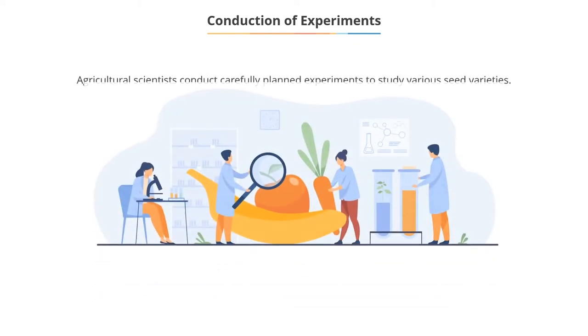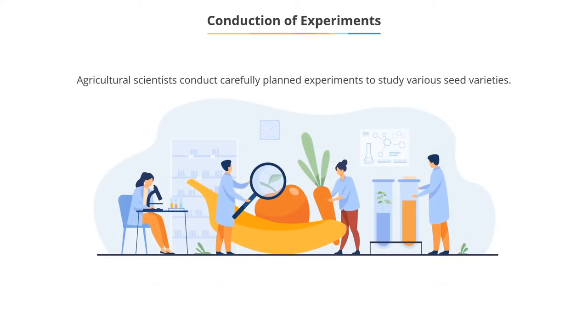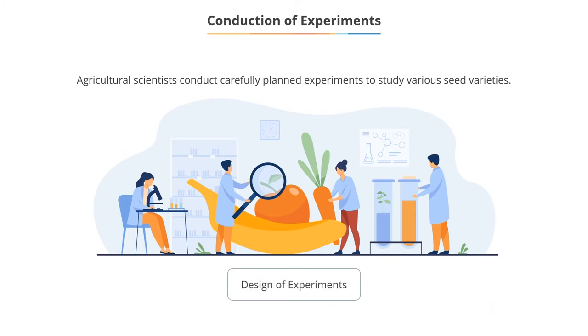Conduction of experiments. Agricultural scientists study the relative effectiveness of various seed varieties with carefully planned experiments. This area of statistics is referred to as the design of experiments.